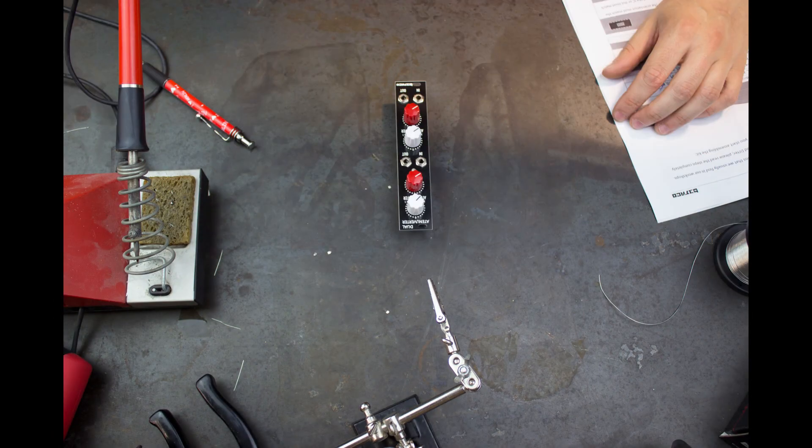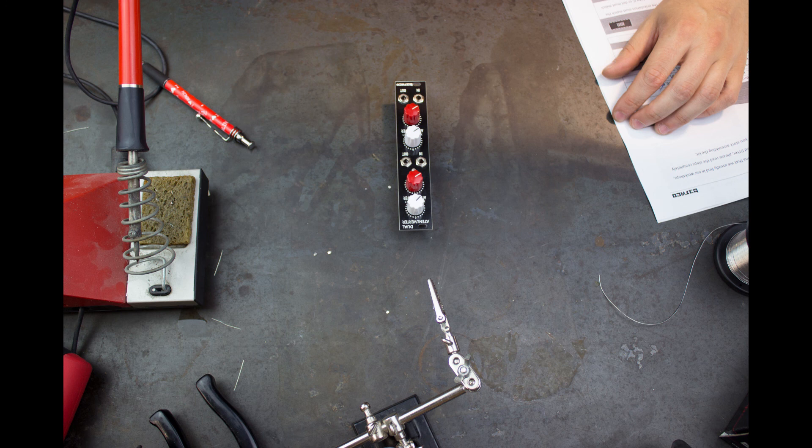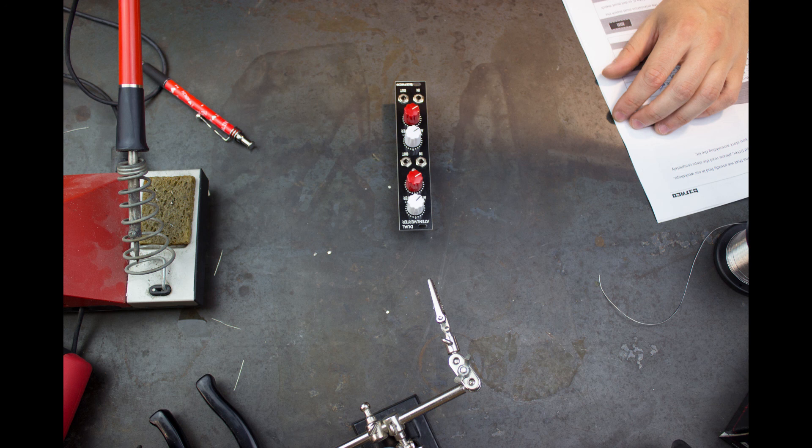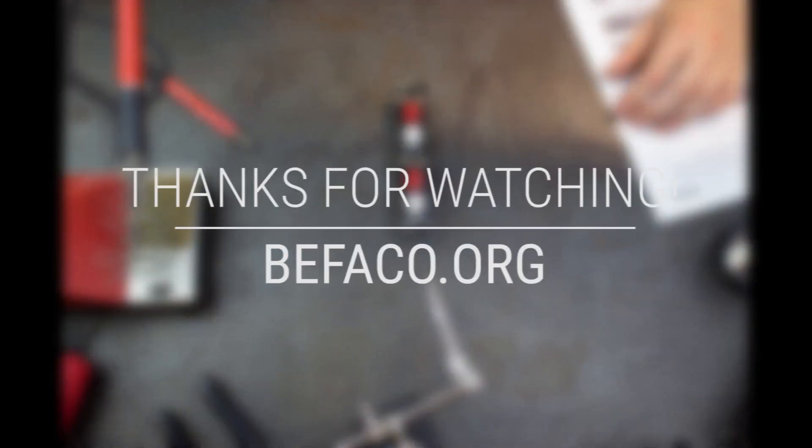The trick to getting them aligned is to turn all the pots to zero and then place your first knob with its mark at your chosen zero point. Then you can match up the rest to this. And that's all there really is to building a DIY Eurorack from a kit.